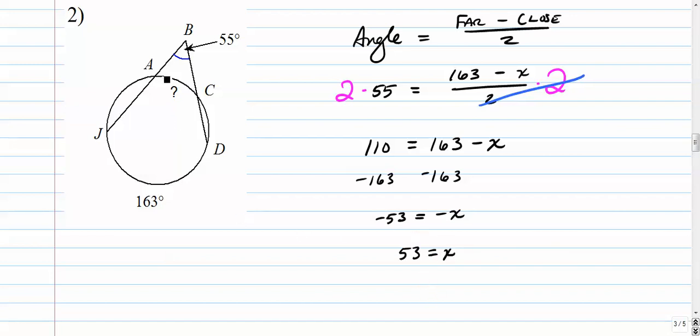And we can check that. If we plug that back in here, we can check it. 55 should equal 163 minus 53 over 2. So, 55 should equal 163 minus 53. That is 110. 110 over 2 is 55.